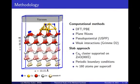Computations were performed with density functional theory and the PBE functional. Plane waves were used in combination with pseudopotentials, and weak interactions between the adsorbate, zinc oxide, and the catalyst were included with the so-called Grimme D2 correction. The copper zinc oxide catalyst was modeled with a small copper cluster supported on oxygen-terminated polar zinc oxide. Using periodic boundary conditions, each supercell contained about 160 atoms.